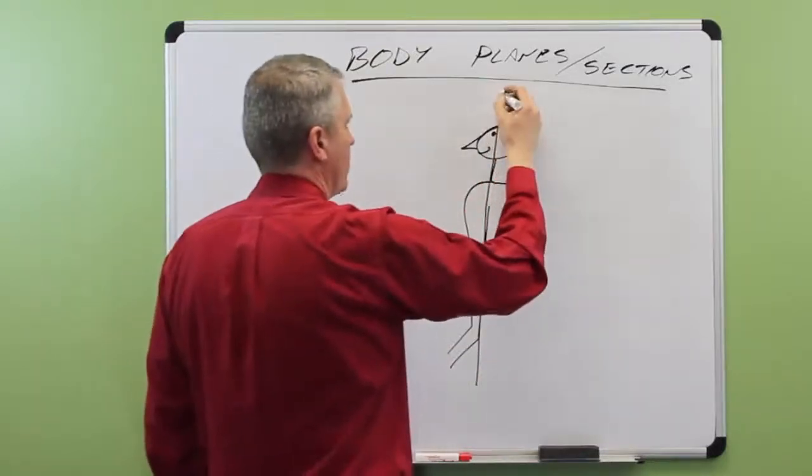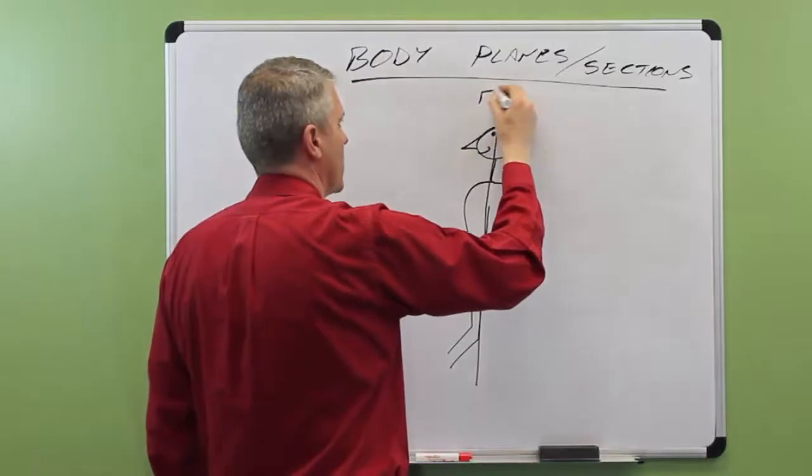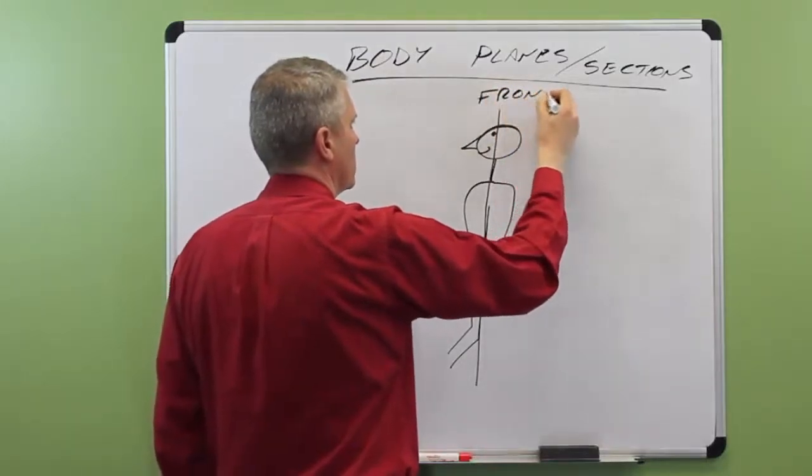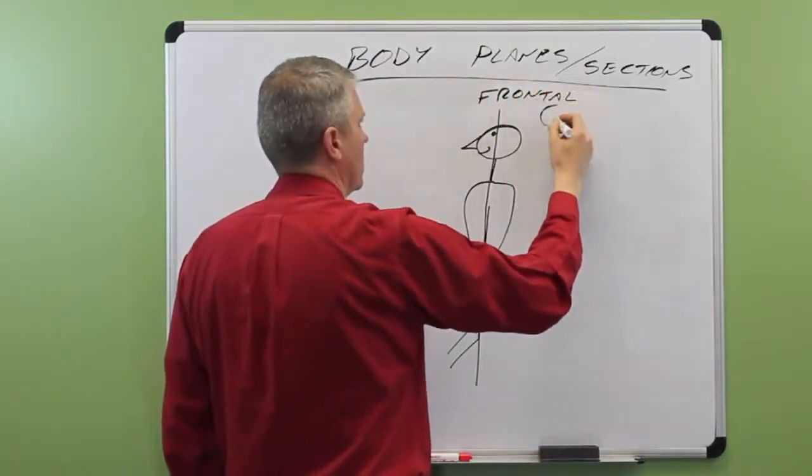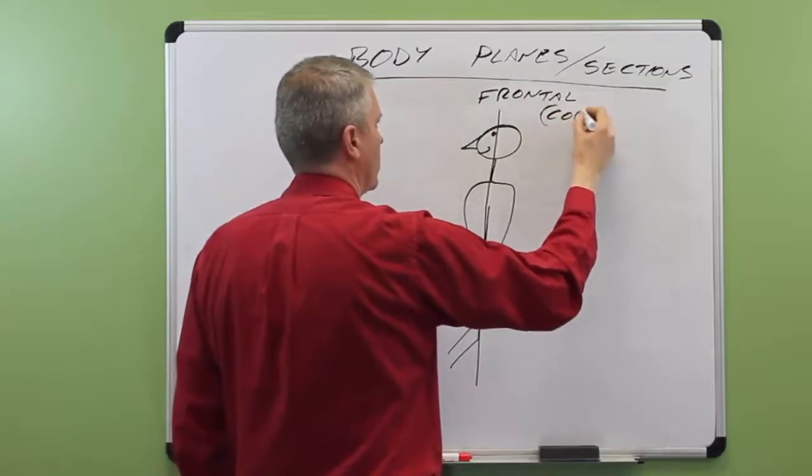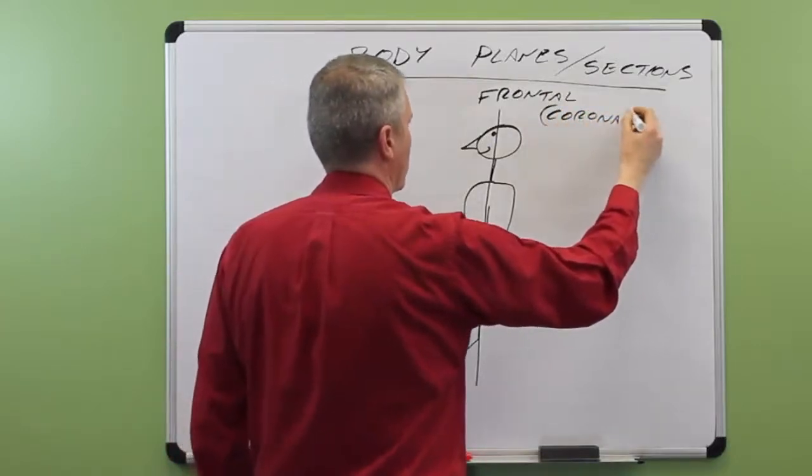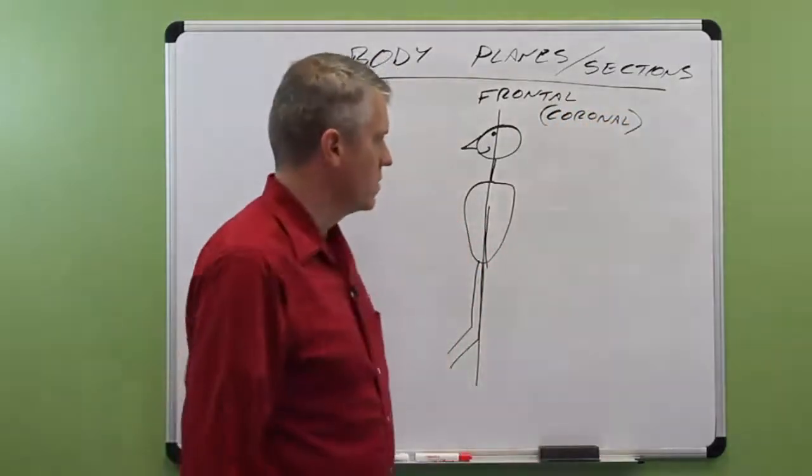We take a slice straight down. This is what's known as a frontal or coronal section. Frontal or coronal. Section or plane.